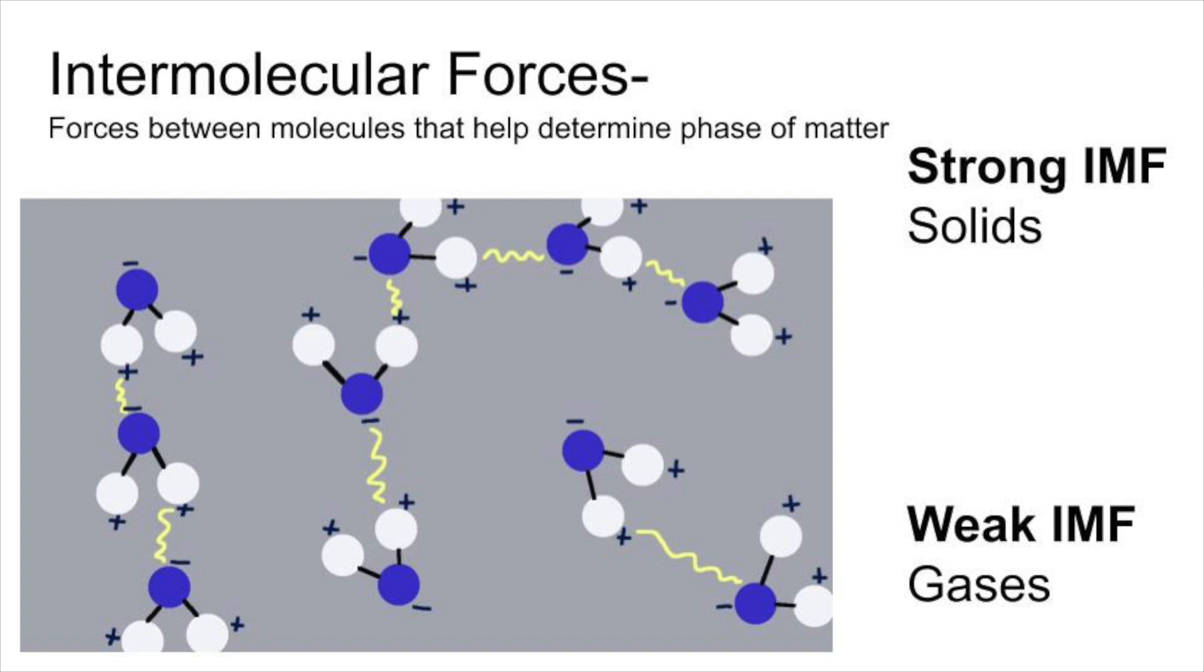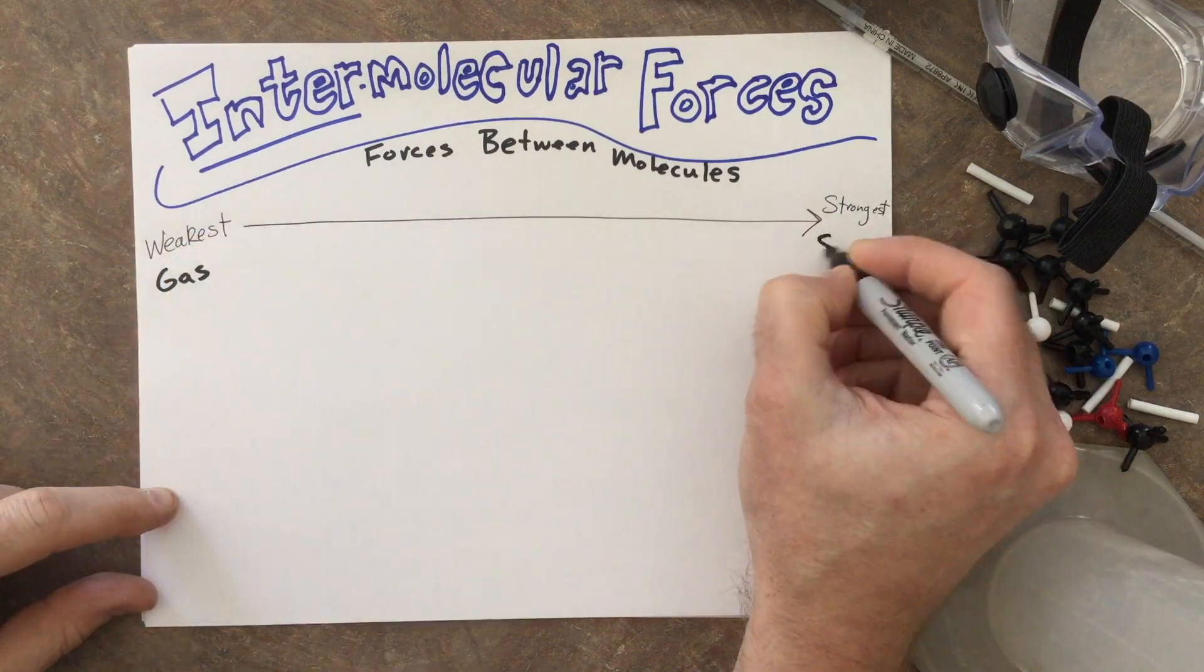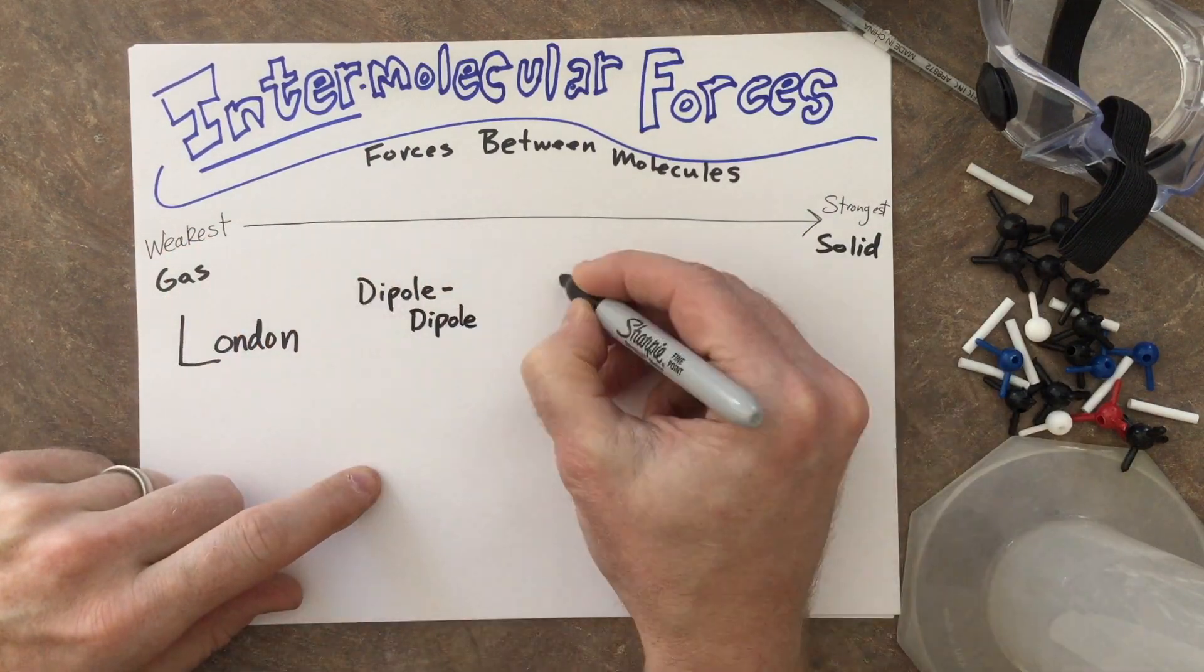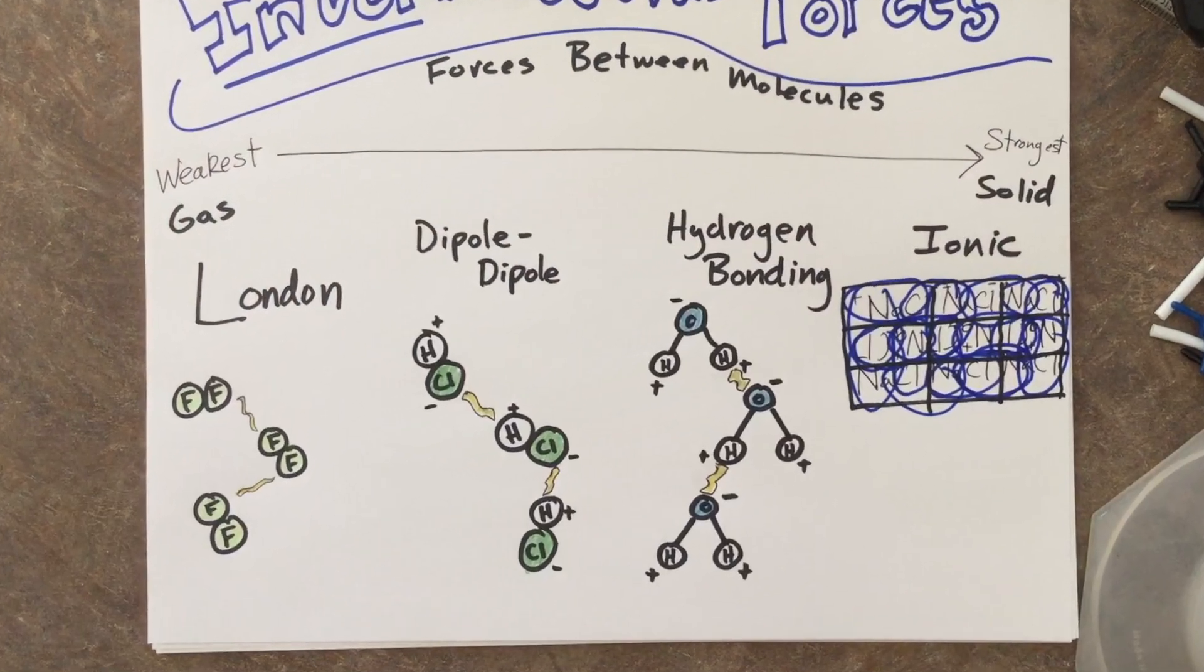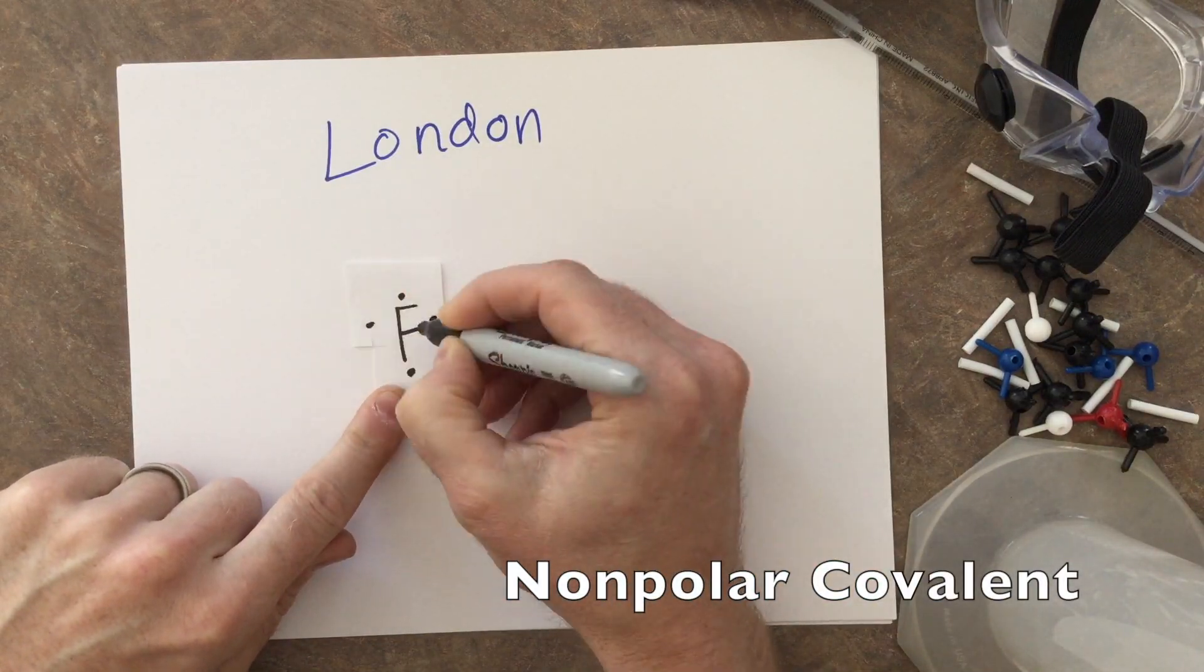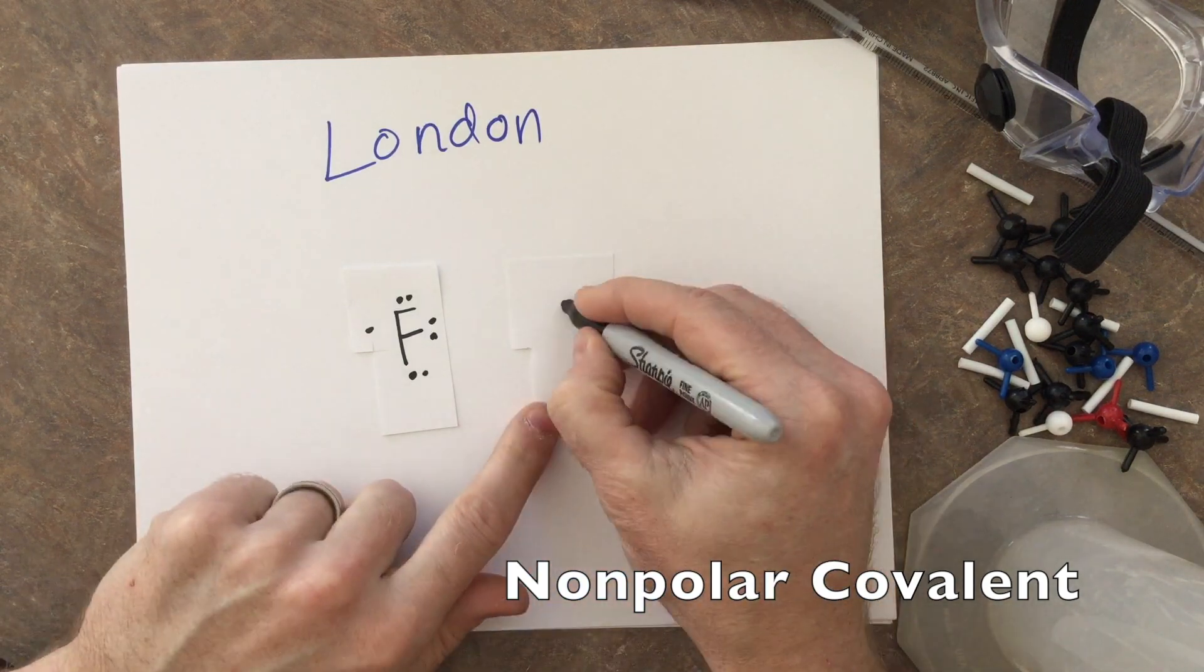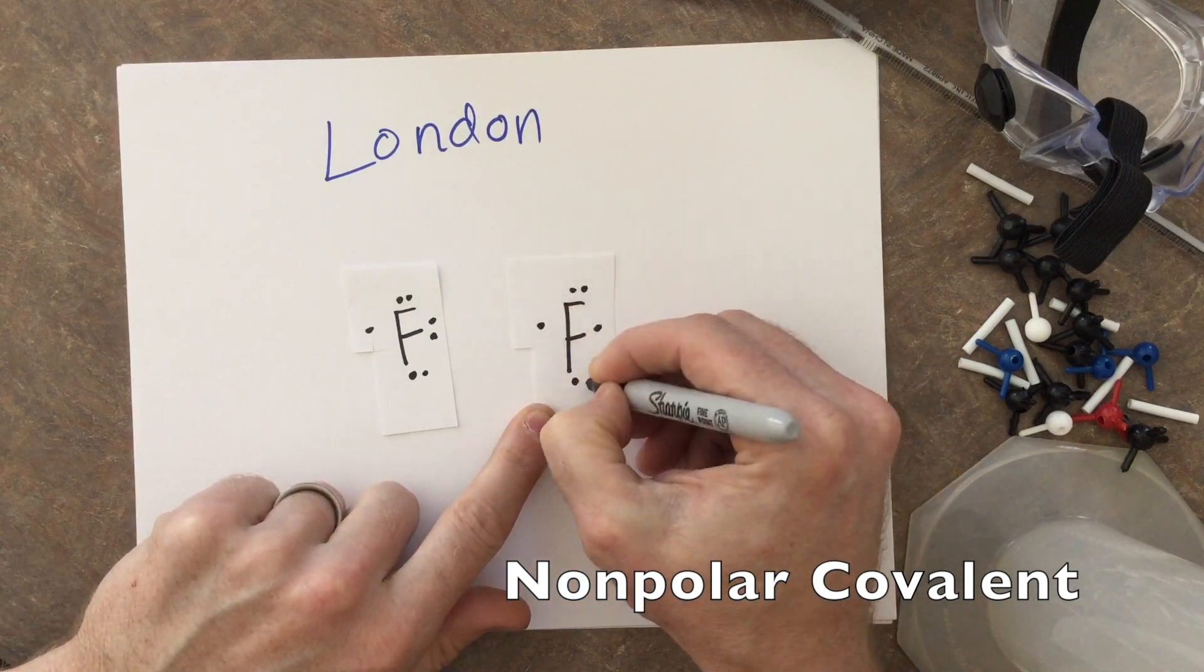Now we'll go a bit more in depth. There are four major types of intermolecular forces, and let's get started with the weakest. London forces are intermolecular forces that we talk about when dealing with nonpolar covalent bonds. Let's take fluorine gas as an example.